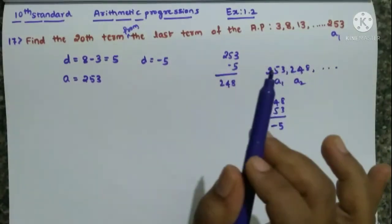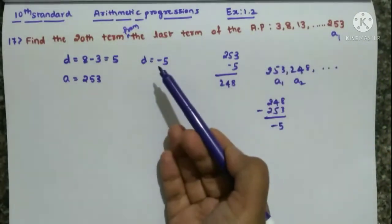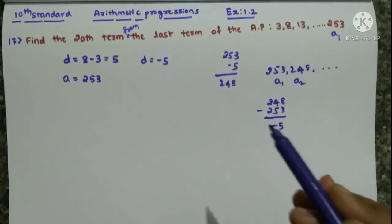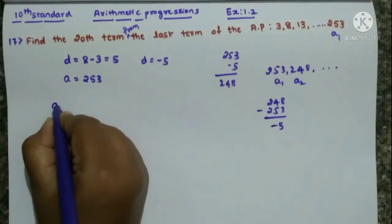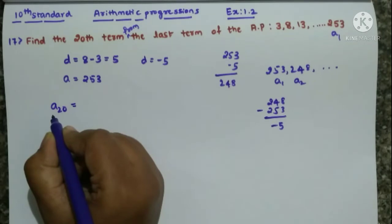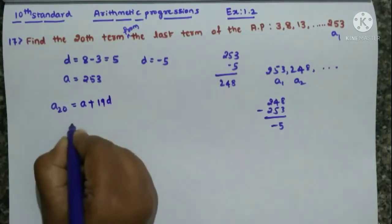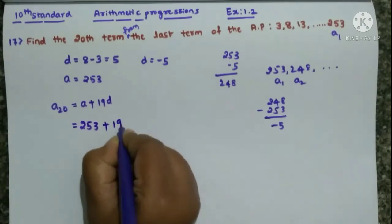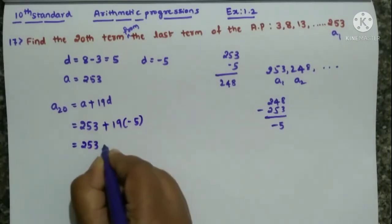No need to worry about this. Just what you should do: last term you have to take as A, and that D whatever you will get, you have to change the sign. Plus if it is there, change as minus. Minus if it is there, change as plus. Now, as it is you find it. A20 formula is what? Because we want to find the 20th term from the last. A20 formula is same here. From the last or first, A20 formula will be same. That is A plus 19D. A value what we have now? 253 we should take. Because we are finding from the last. D value is minus 5.